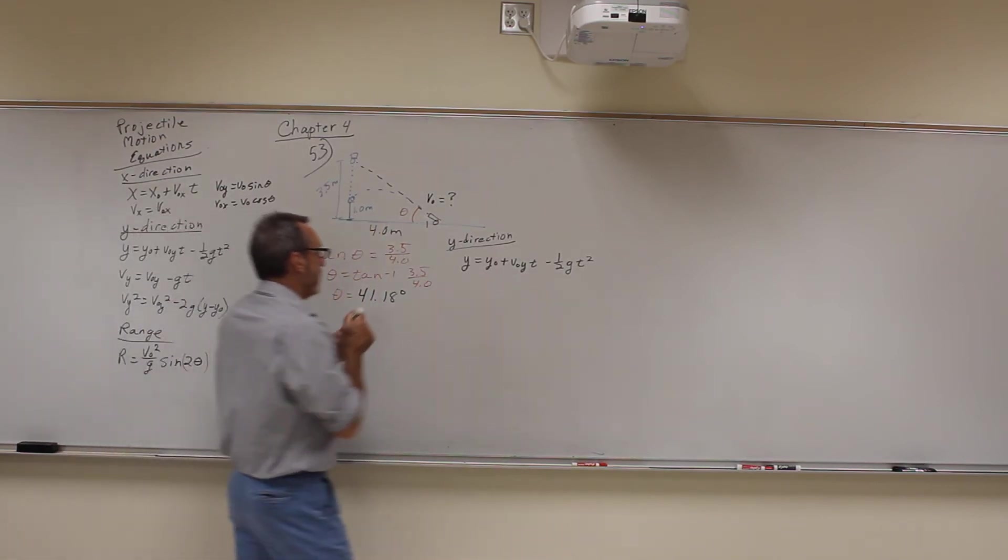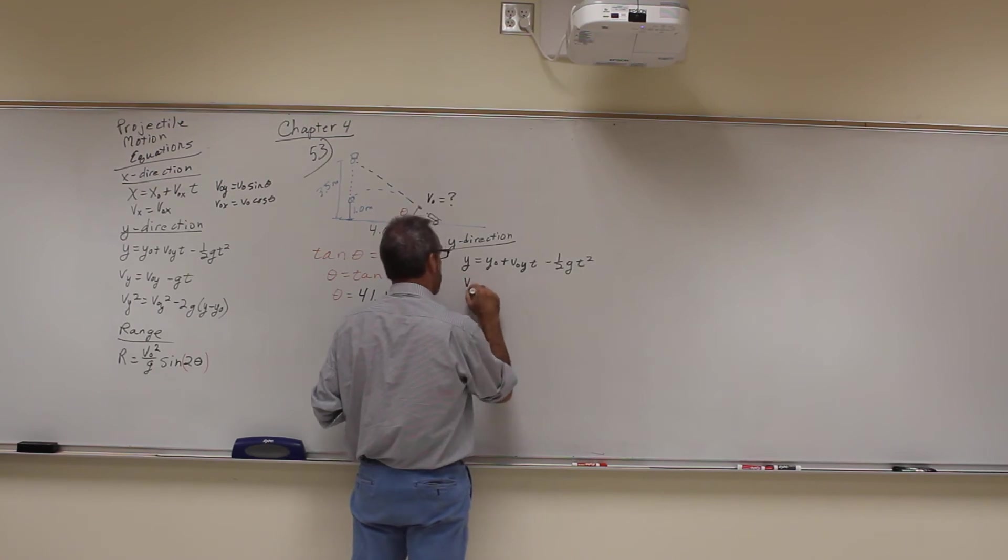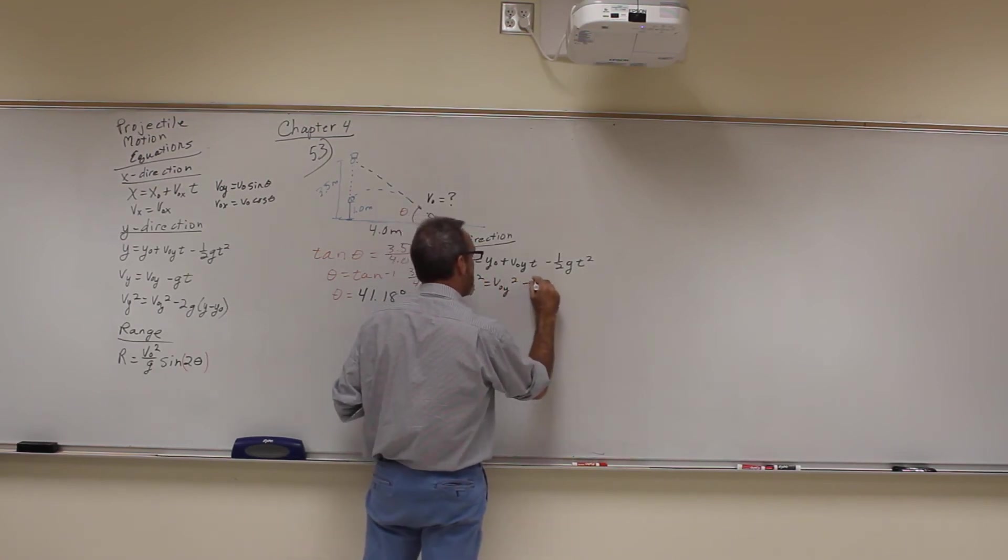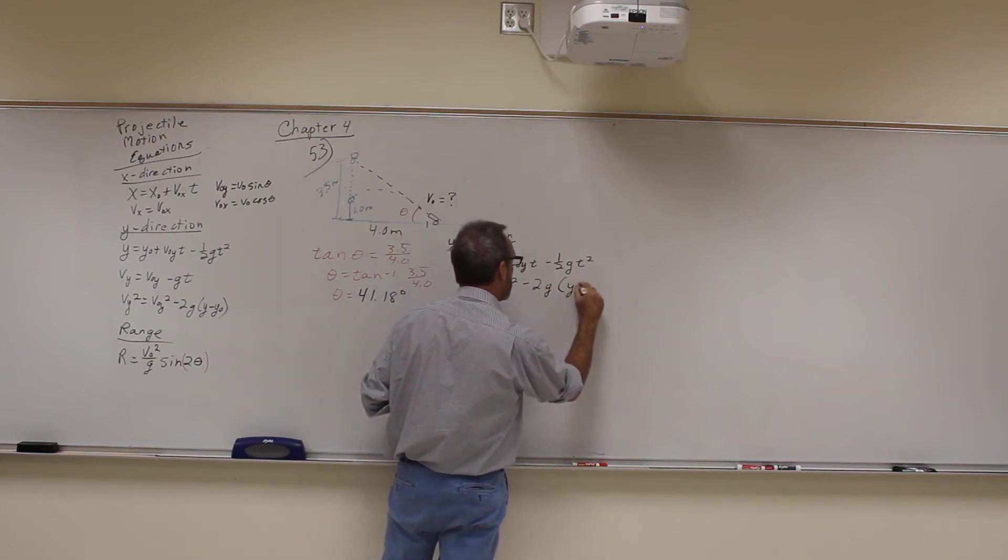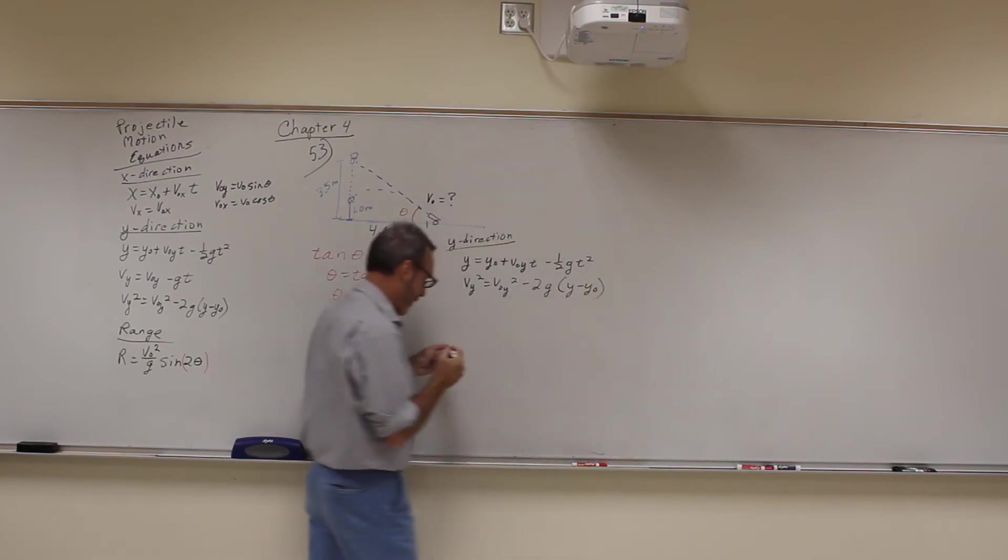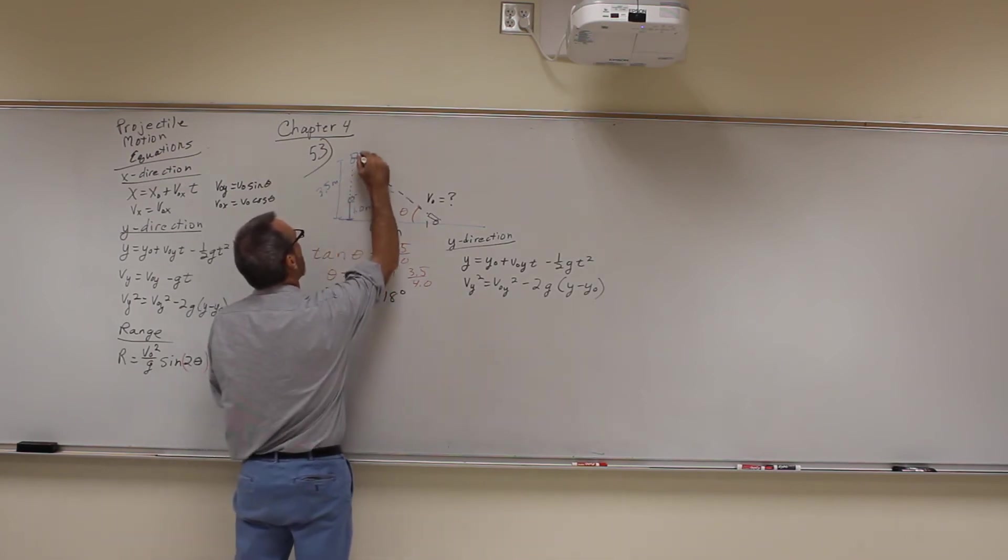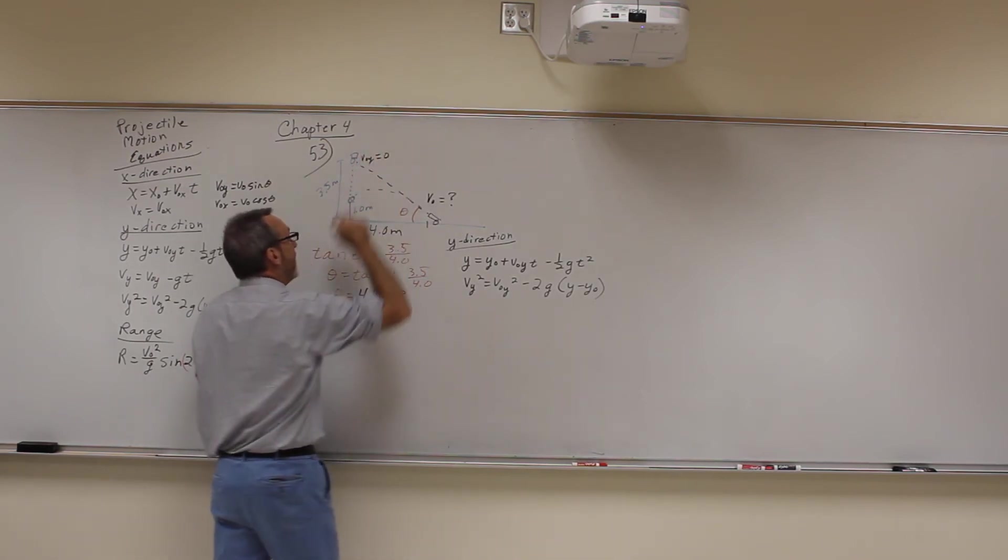We know the initial y up here, the initial v0y for the ball here is equal to 0. They just drop it, they don't throw it.